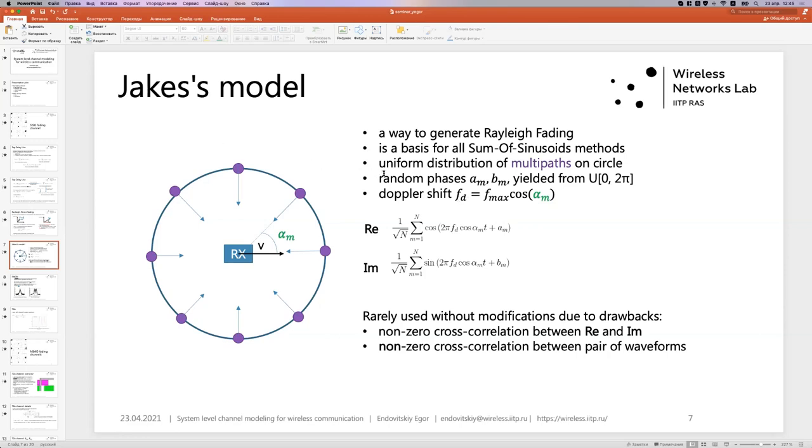So the fading process in such model is given by two components, real and imaginary. It's a complex process. Doppler shifts are given by such formula because they are uniformly on circle. For example, f max is a parameter for Doppler fading. It is maximum frequency of Doppler shift. Now, the real part is obtained by summing cosine function and imaginary part is obtained by summing sine functions.